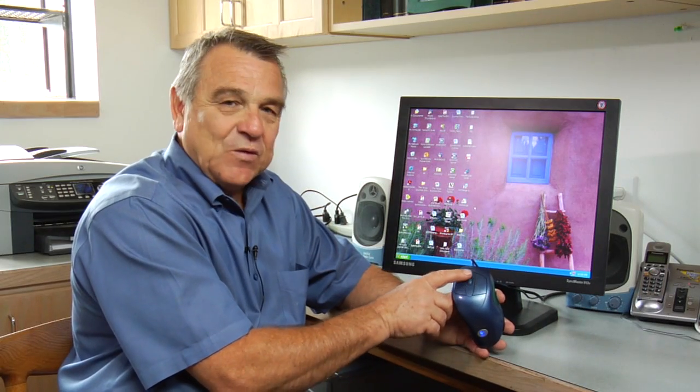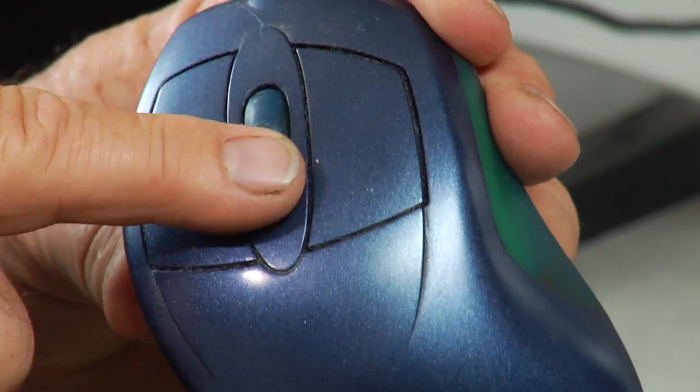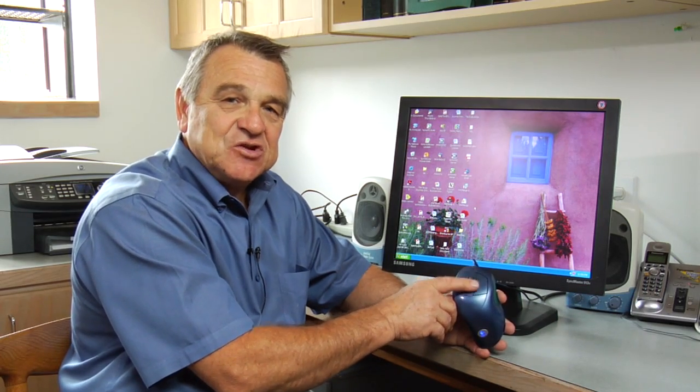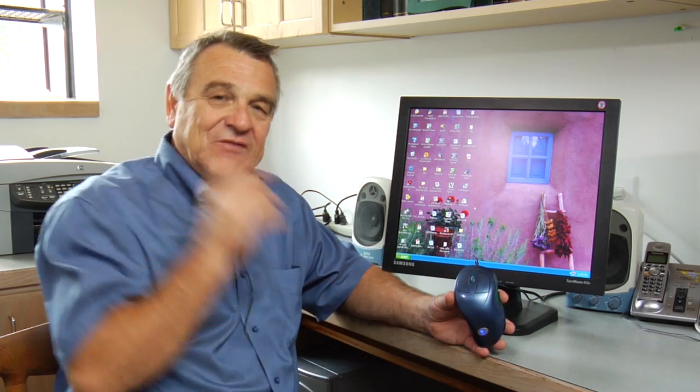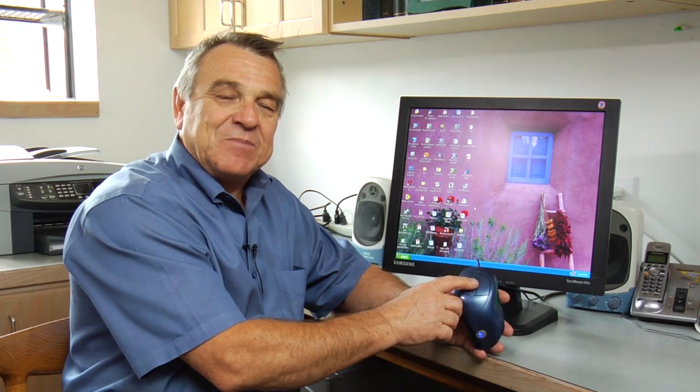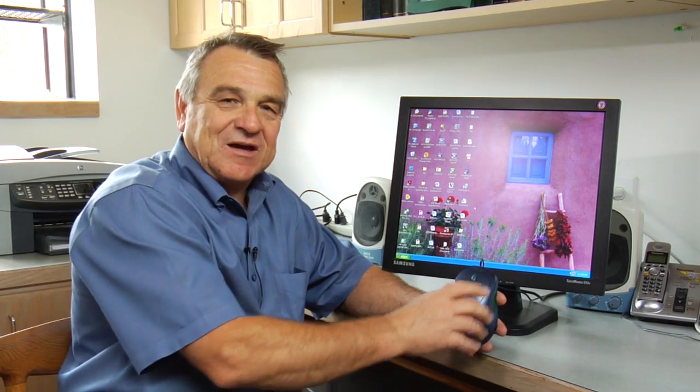In the center, I have a little wheel and this is called a scroll wheel. It's very common on all computer mice nowadays. And this allows you to move up and down a page. So if you have an internet page or a Word document page, you can use this scroll wheel to move up and down the page instead of having to move the mouse up and down all the time.